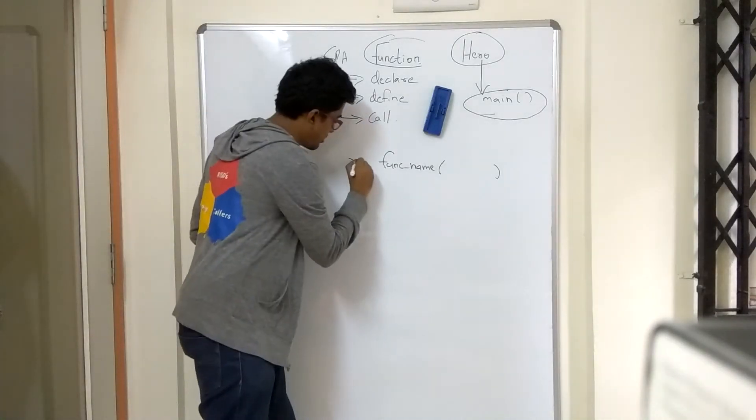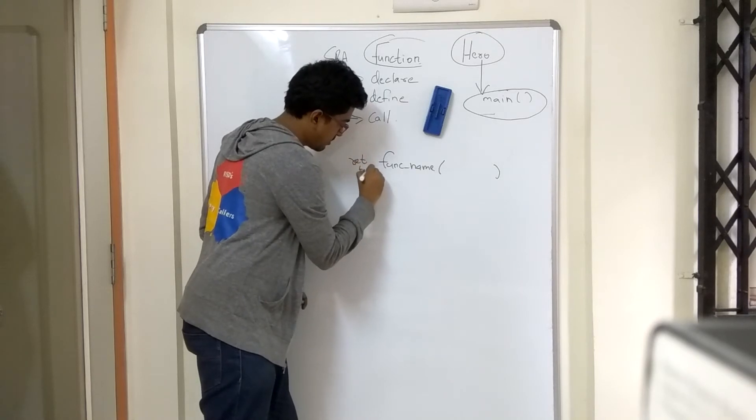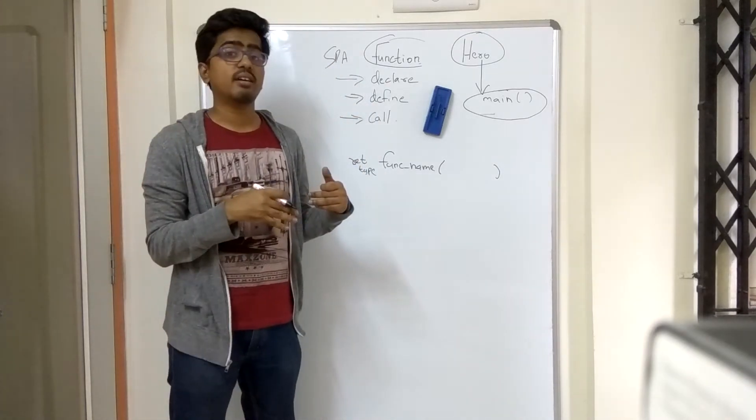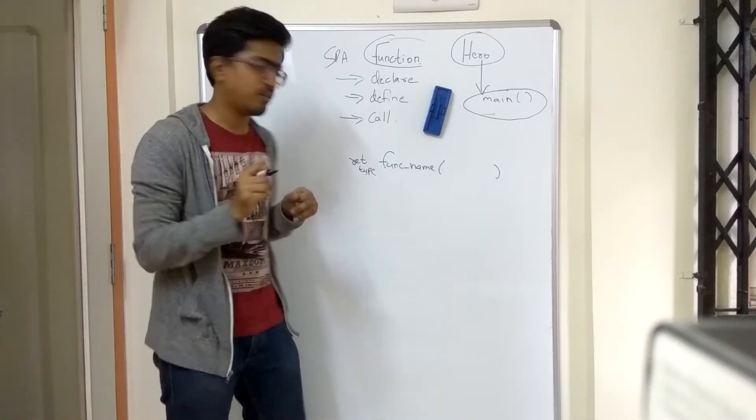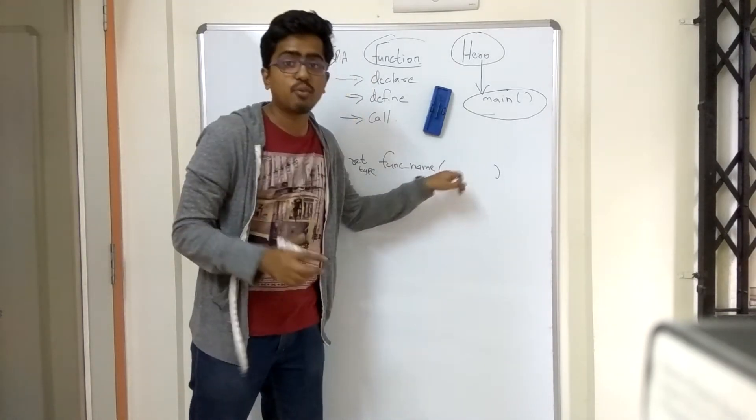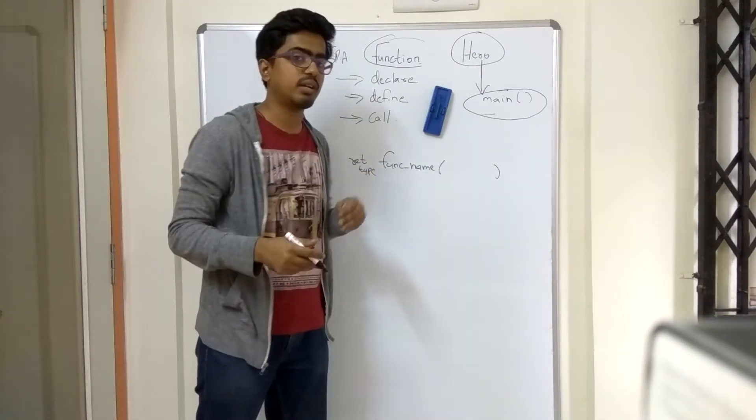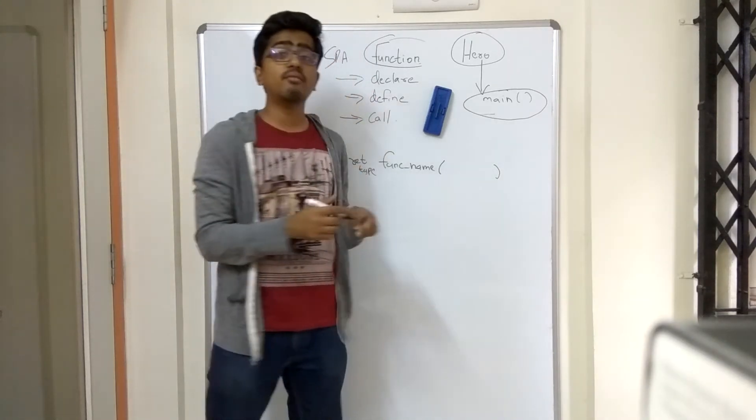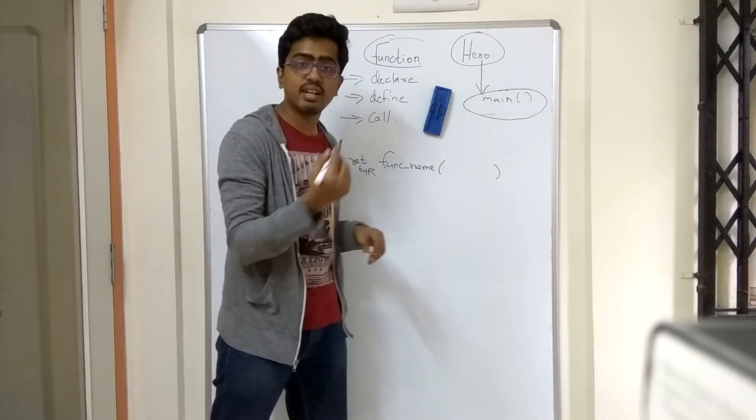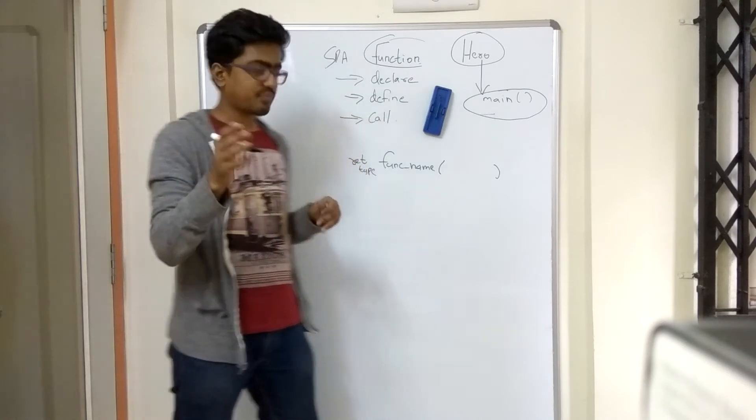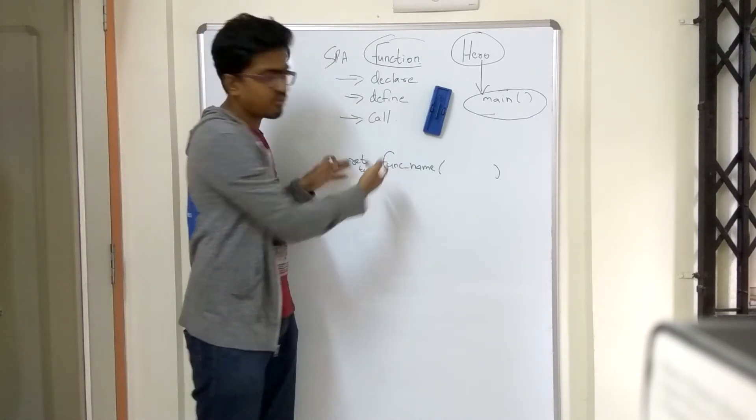So here you are going to write the return type. Matlab, jo output milne wala hai, wo kis prakar ka hai? Yahan pe input hai. What are the things that you are passing to it to do it? So you have different types of data types. You have int variable, char. So all those, you are going to fill in here.